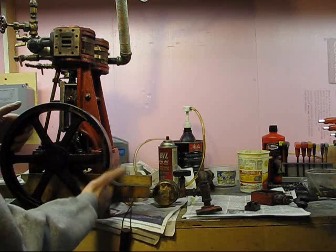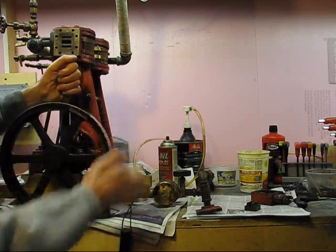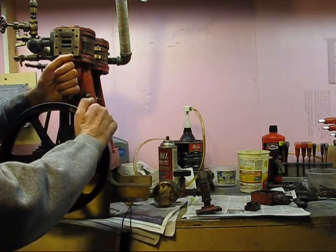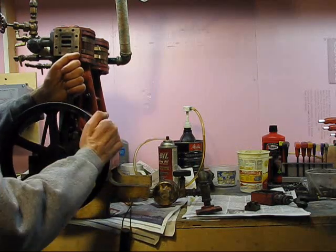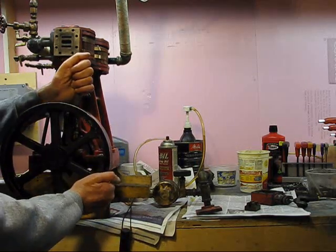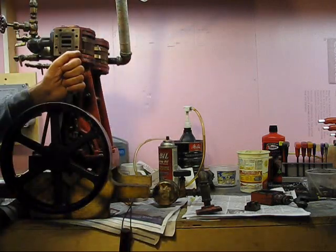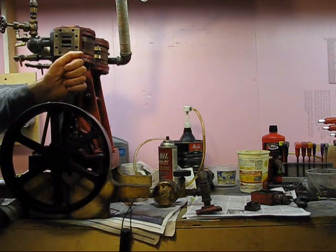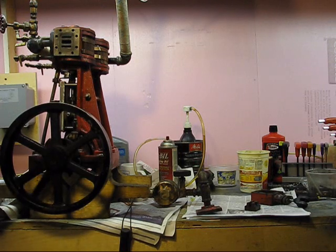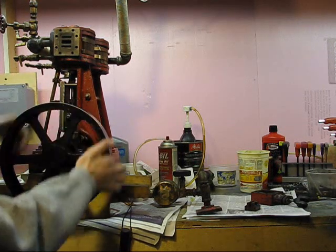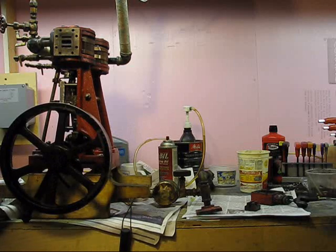This is a slip eccentric that we have on this, and to reverse this engine you have to shut the steam off to the engine, slip it around the other side a few degrees, almost 180, and then the engine will take off when you re-establish steam. It'll take off in the other direction. So that's how the slip eccentric works on this reversing mechanism.